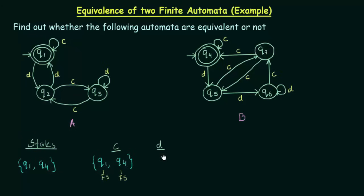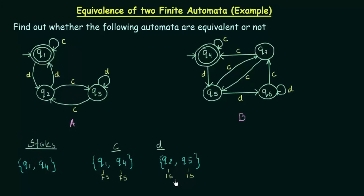Now let us see what happens on getting input D. Q1 on getting input D goes to Q2, and Q4 on getting input D goes to Q5. Q2 is an intermediate state and Q5 is also an intermediate state — that means a non-final state. Here the pairs of states we get are both intermediate states, so this condition also supports that they are equivalent.